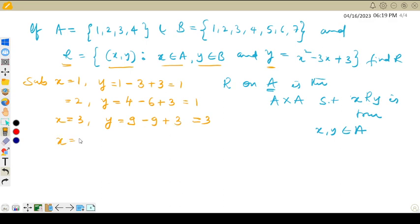Finally substitute x equal to 4 because x belongs to set A. So y value is 4 times 4 is 16, 3 times 4 is 12, plus 3. So the value is 16 minus 12 is 4, 4 plus 3 is 7.